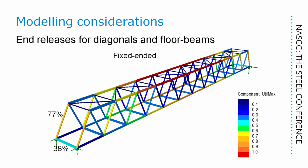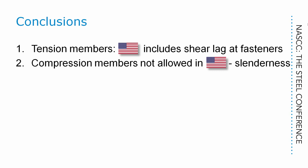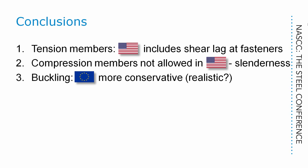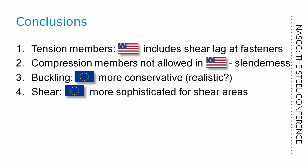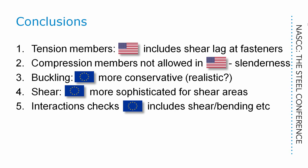To summarise: for tension members, AASHTO seems superior to the Eurocode because it includes the effects of shear lag at fasteners. Some compression members which should be acceptable under Eurocode rules are not allowed under AASHTO rules due to considerations of slenderness. For buckling in compression, the Eurocode is more conservative and, with a more elaborate approach for imperfections, may be more realistic. In shear, the Eurocode takes a more sophisticated approach for shear areas. For interaction checks, the Eurocode includes shear-bending and shear-bending-axial force checks which are omitted in AASHTO, but AASHTO offers a simpler approach with simple formulae for moment magnification. And AASHTO really is more concise. That concludes our presentation — we hope you found it informative.